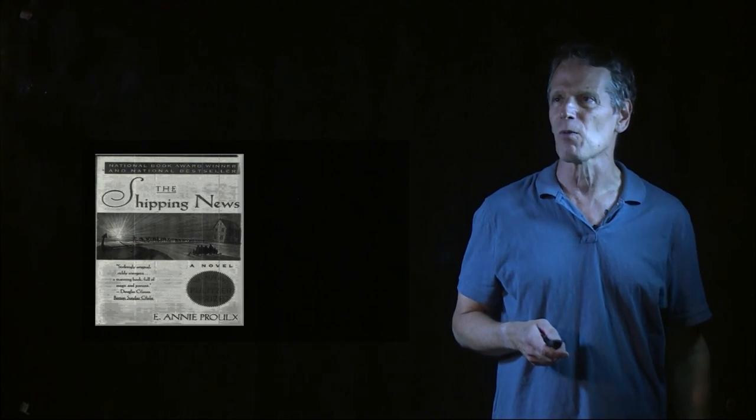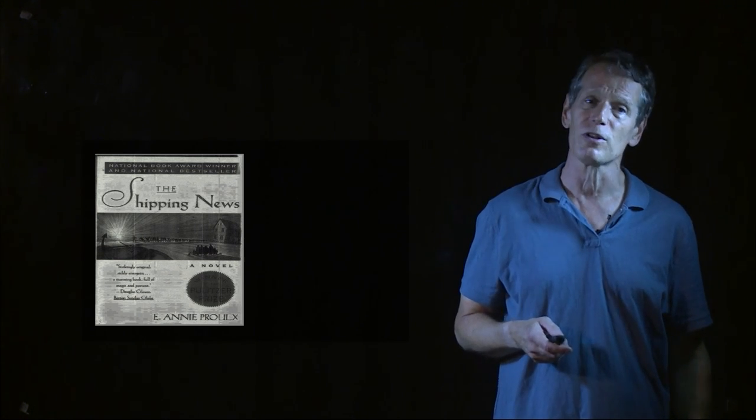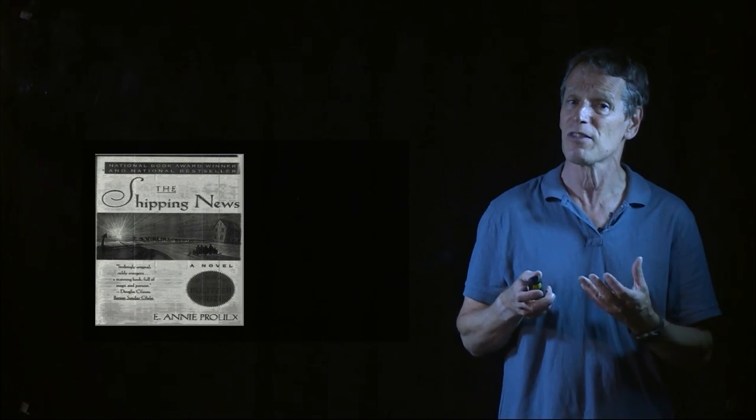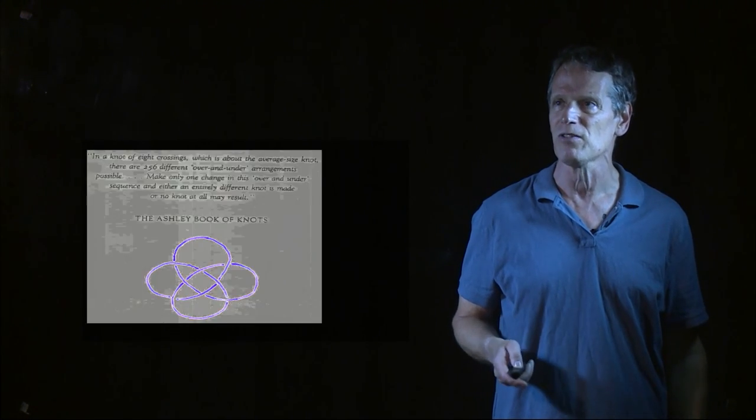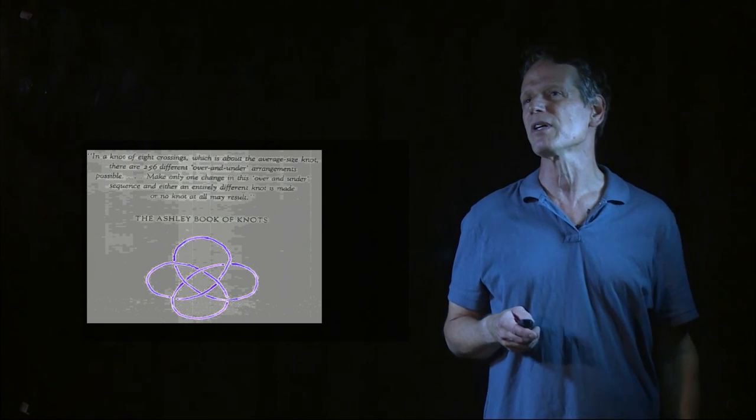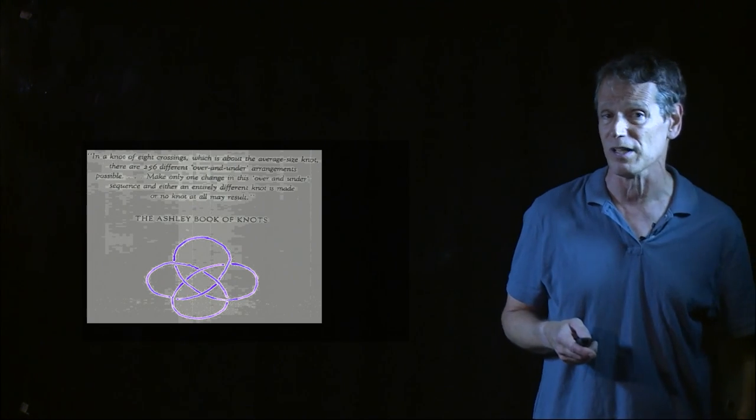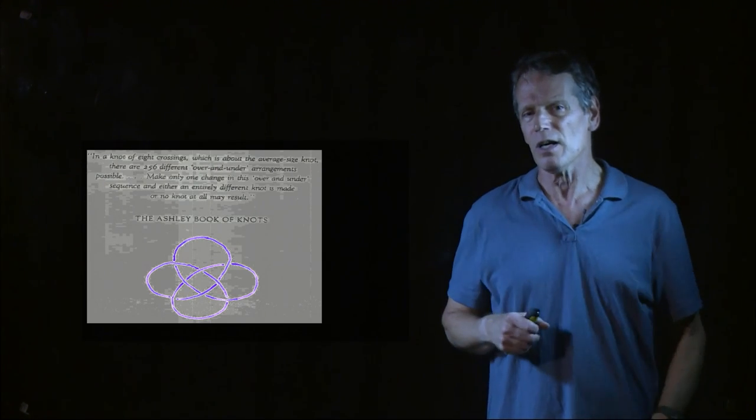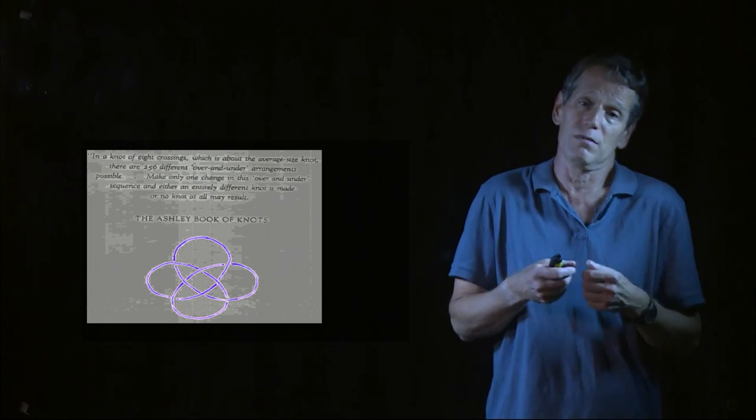This is a book that came out a while ago called The Shipping News. It won a lot. It won the Booker Award, won the Pulitzer. It's a wonderful book if you get a chance to read it. And it takes as one of its themes knot theory. And so in particular in this book, the frontispiece of the book is from the Ashley Book of Knots. And what it says is the following. It says take a knot, a particular knot of, let's say, eight crossings. So the particular one I have drawn there is one of eight crossings. So take a knot of eight crossings.